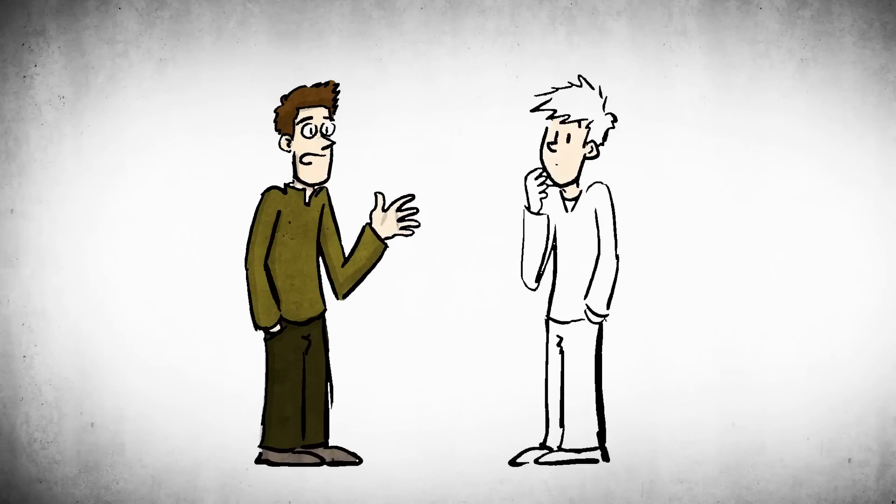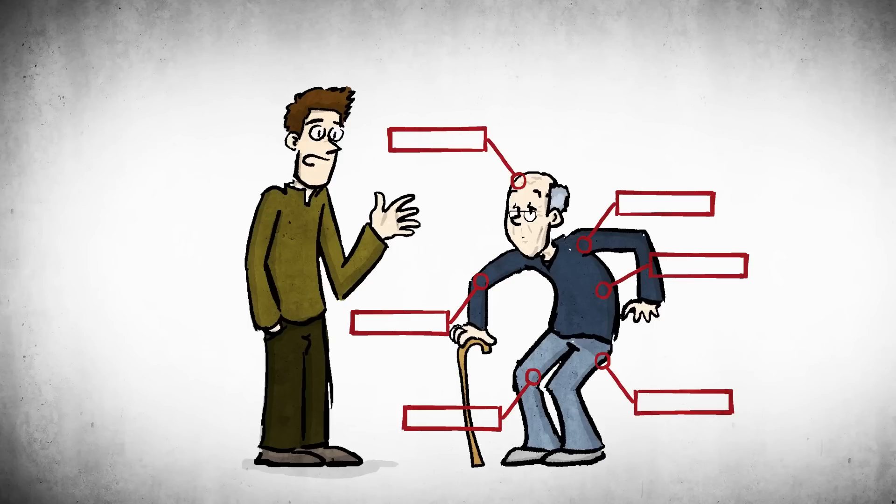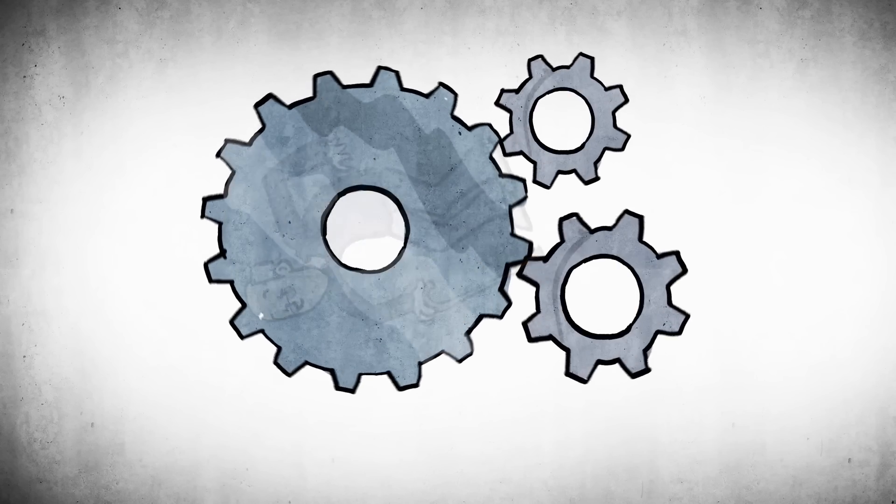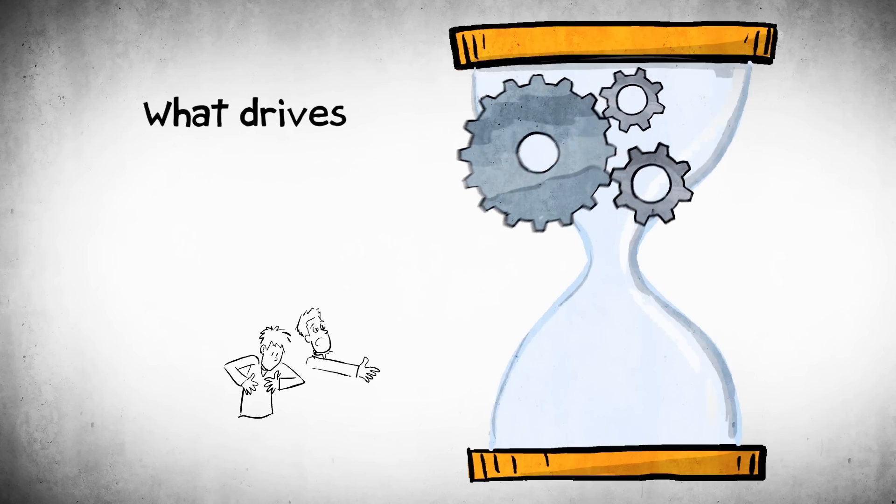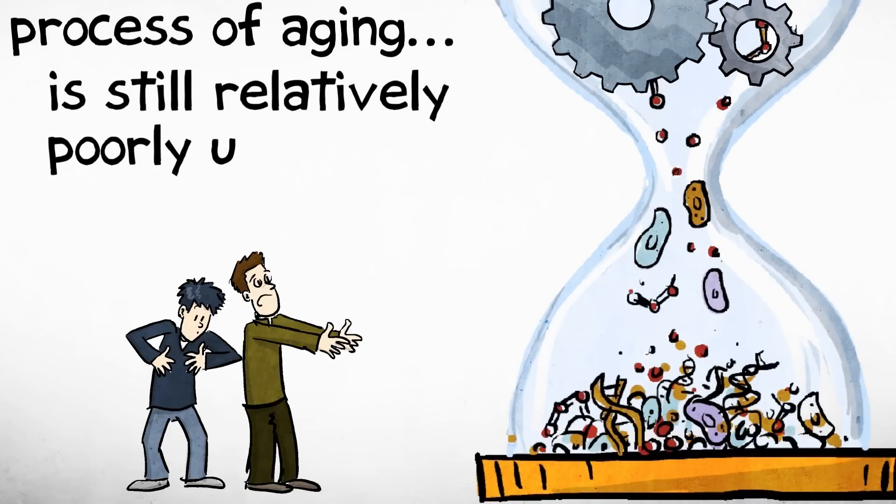The thing with aging, of course, it entails different levels and different organs and different systems in the body, which makes it very complex and relatively difficult to study. We actually don't know much about aging in the sense of its mechanisms. Why we age, what drives the process of aging from a cellular molecular perspective is still relatively poorly understood.